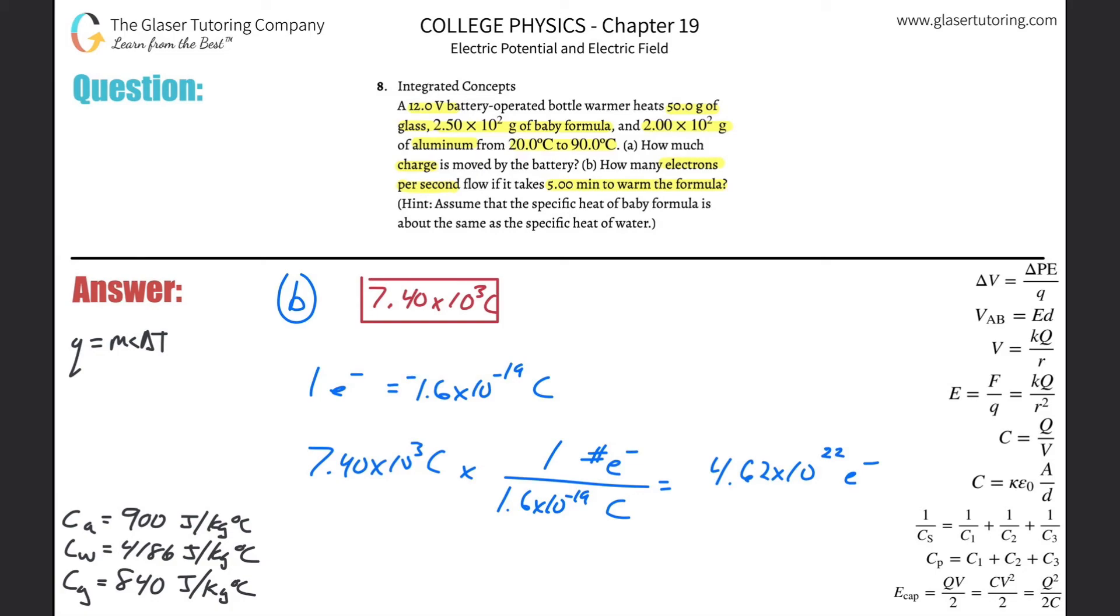Now that's how many electrons there are, but they don't want to know the total number. They want to know electrons per second if it takes five minutes to warm the formula. We know the total amount of electrons, and we know that this number of electrons has to flow over five minutes. So I can take my 4.62 times 10 to the 22nd number of electrons, divide by five minutes, because we know that this total number of electrons has to flow over five minutes. This would give me the total number of electrons per minute. But I don't want to know per minute, I want to know per second. So we got to go from minutes to seconds, minutes on the top, seconds on the bottom, 60 seconds in a minute.